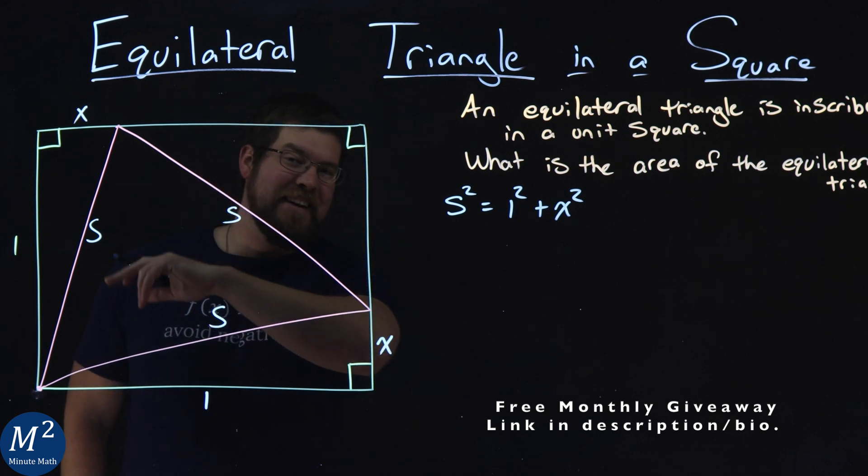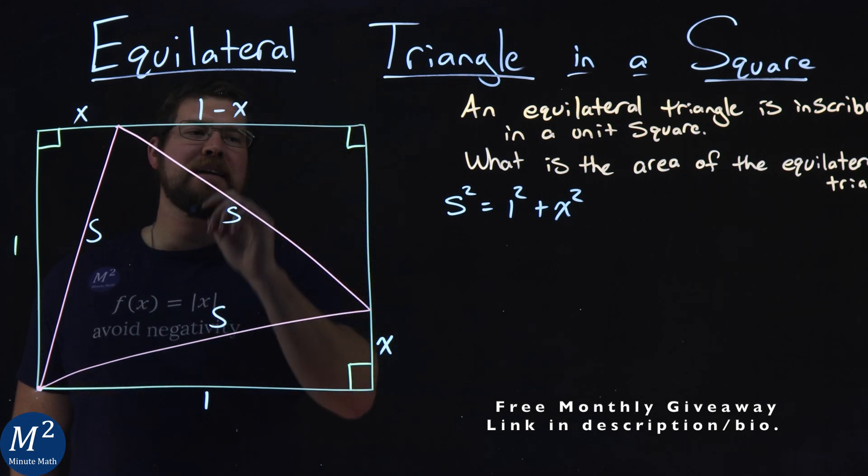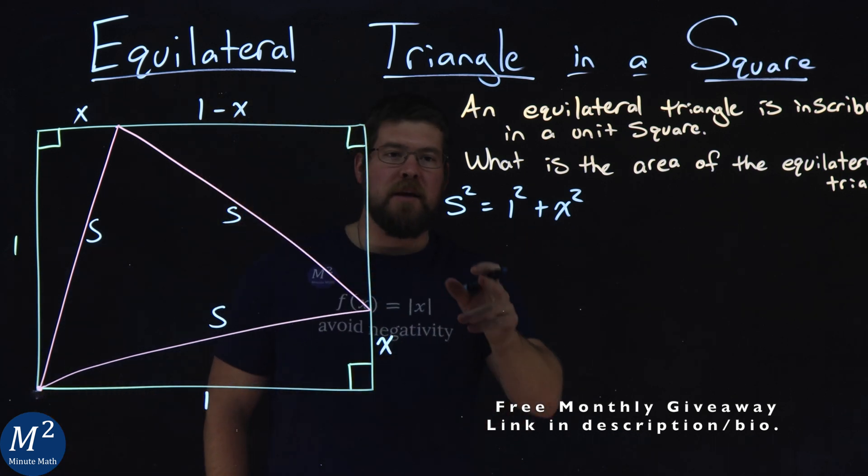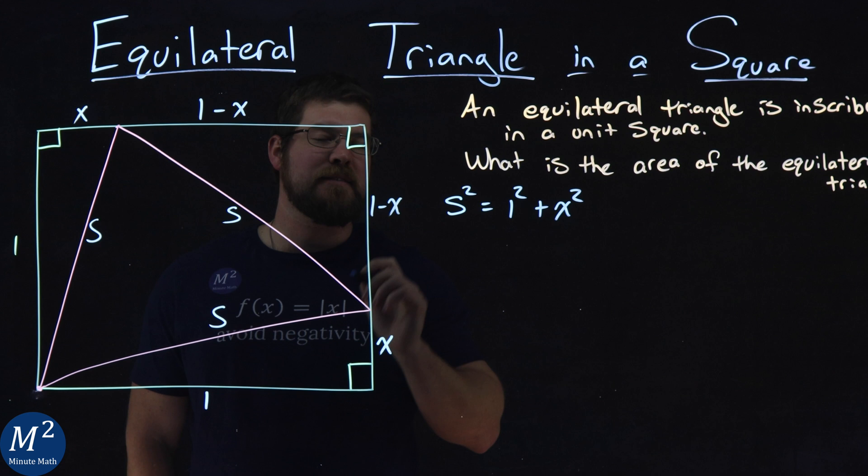So this second length broken up here can be written as 1 minus X. And in a similar way, like we found this one here, this side length here would be 1 minus X as well.